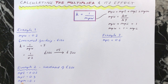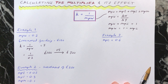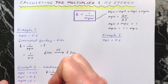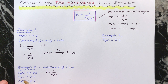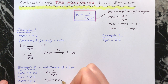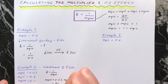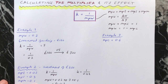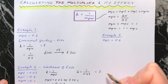The next example is a bit different — this gives us the marginal propensity to tax, save, and import, the three withdrawals. We know that k equals 1 over the marginal propensity to withdraw, and since those three are all the withdrawals, the marginal propensity to withdraw equals 0.02 plus 0.3 plus 0.1, which equals 0.42. So we can now say k equals 1 divided by 0.42, which equals 2.83. We do everything to two decimal places.